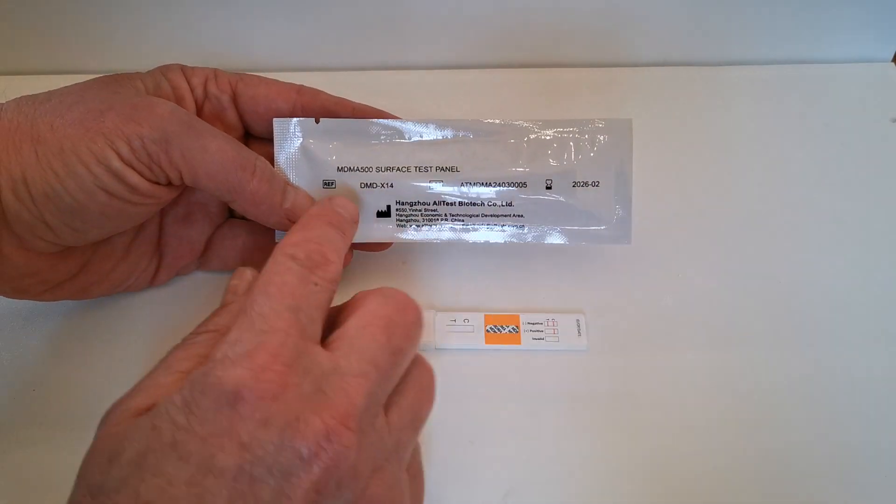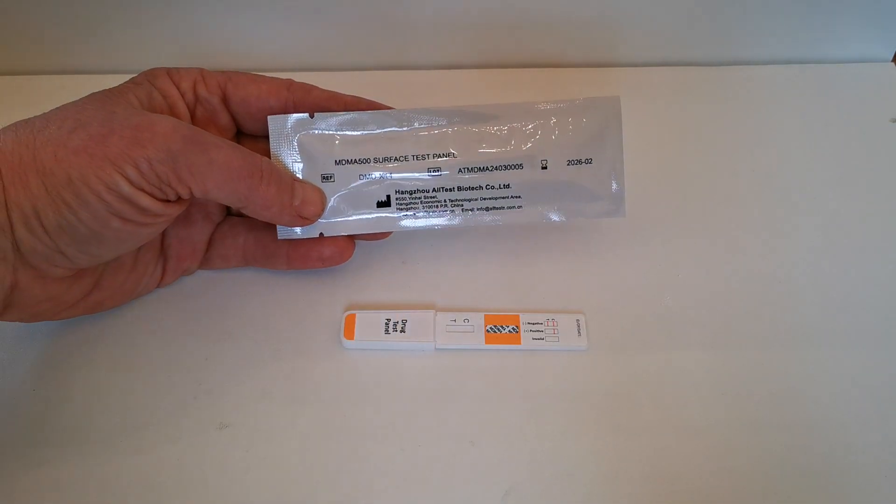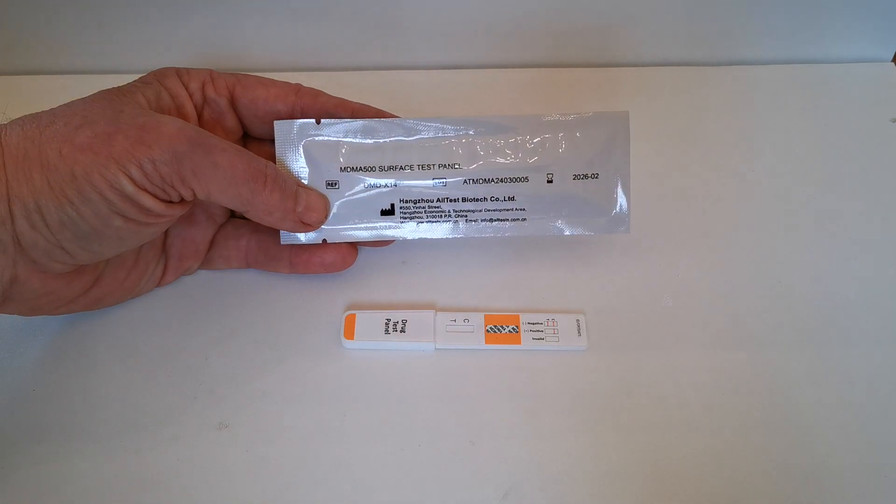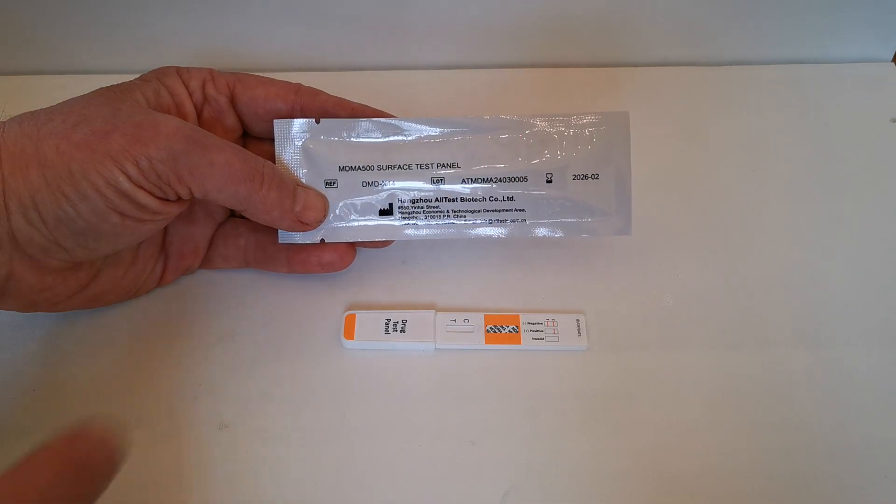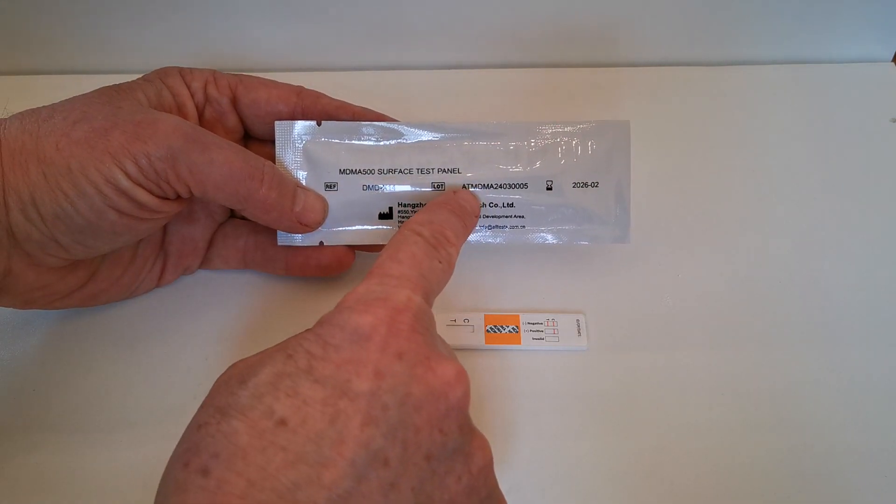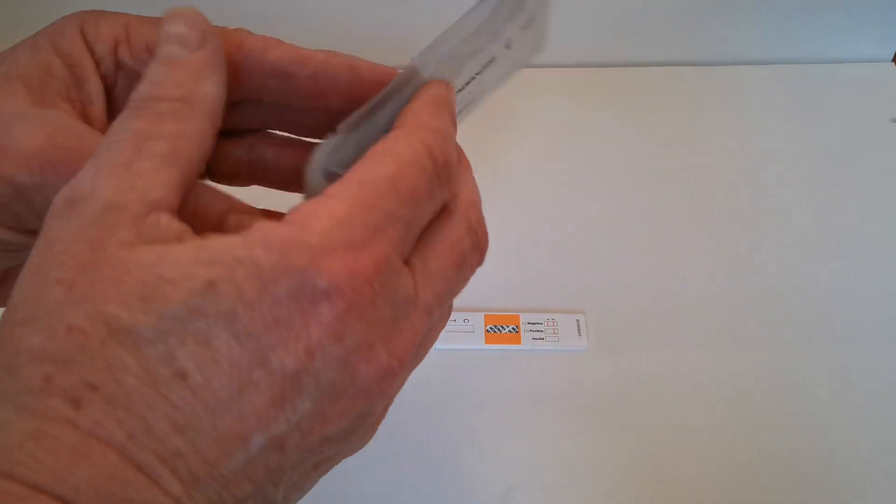On the reverse you will see MDMA 500 nanogram, which is the cutoff sensitivity surface test panel. It also has its code, the lot number, and the expiry date on the outer side of the foil.